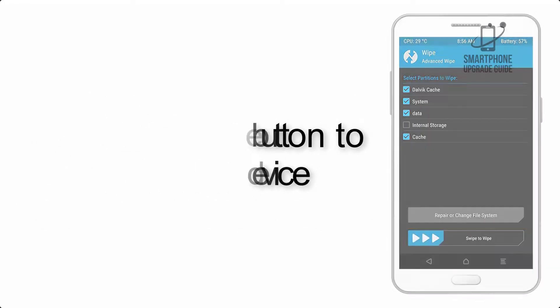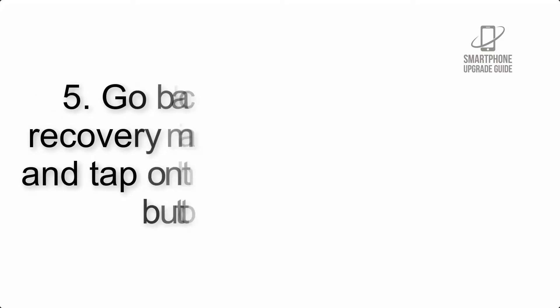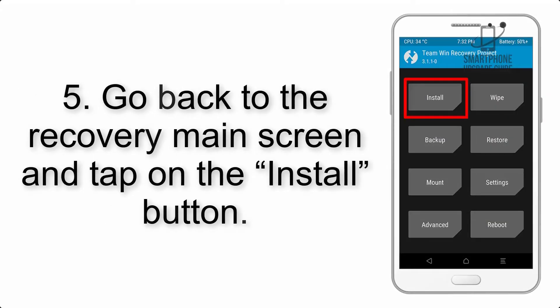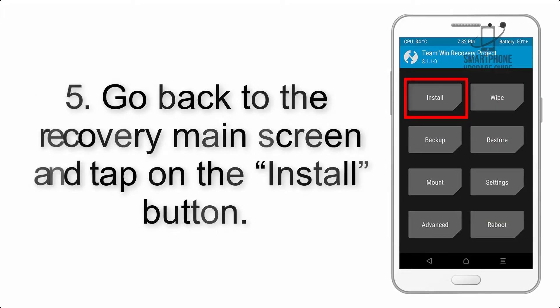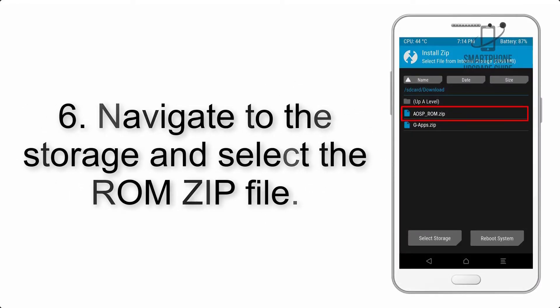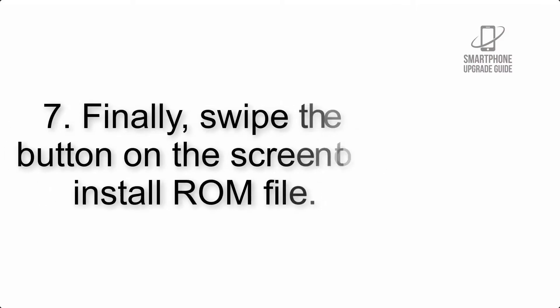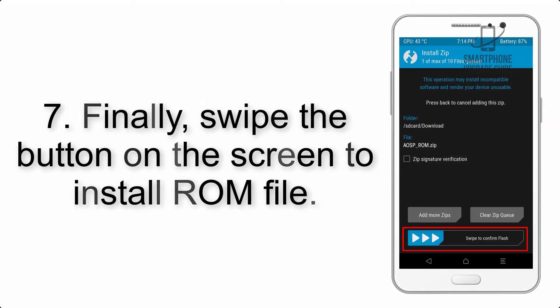Step 4: Swipe the button to wipe the device. Step 5: Go back to the recovery main screen and tap on the Install button. Step 6: Navigate to the storage and select the ROM zip file.